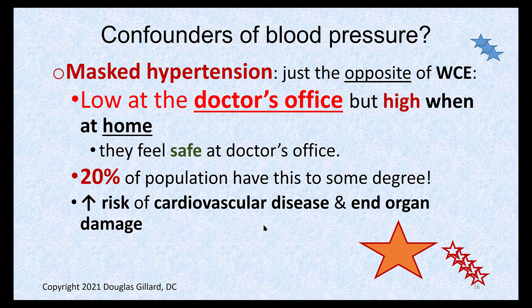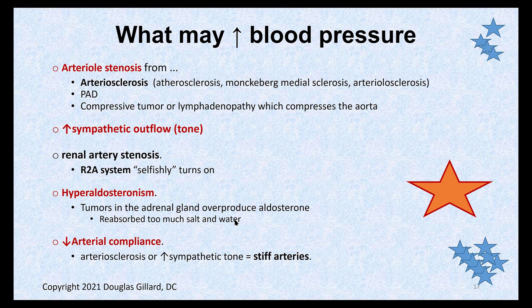Another 20 percent of the population actually feel very safe in a doctor's office and have blood pressure that is artificially lower than normal — sometimes called masked hypertension. Interestingly, this group has an increased risk for cardiovascular disease and end-organ damage. This is why it's good for anyone over 40 to have a home blood pressure unit. Hypertension is the silent killer — it causes atherosclerosis, which is the root of heart attacks and stroke.